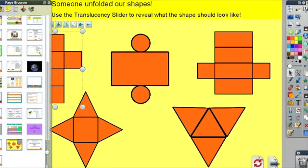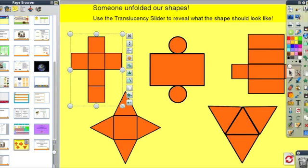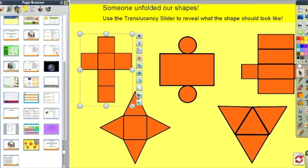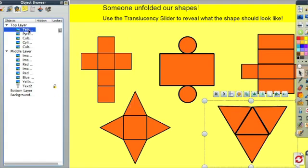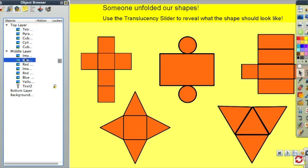So how did I set this up? Let's take a look at our object browser. Our object browser shows that there are certain objects on the top layer, and these are those nets, and there's other objects in the middle layer.